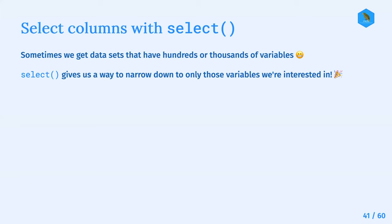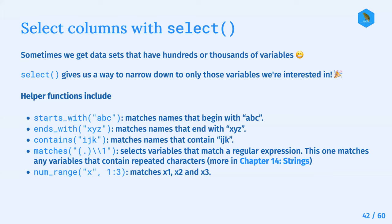Select gives us a way to narrow down to only those variables we're interested in - it's super handy. Some helper functions that can be used with select include starts_with(), where you indicate a string to match names that begin with, for example, 'ABC'.